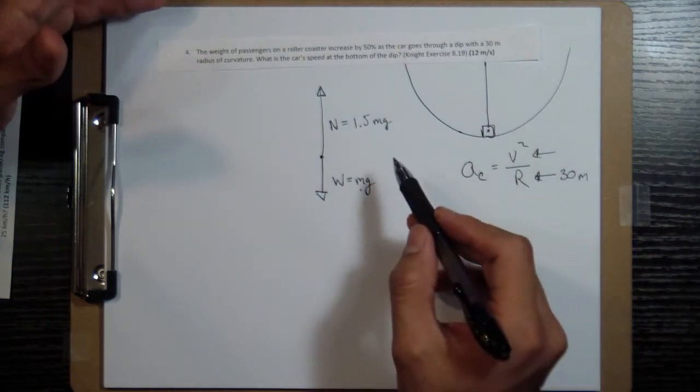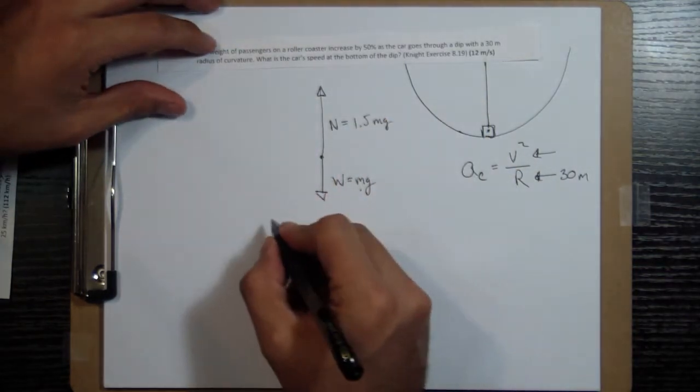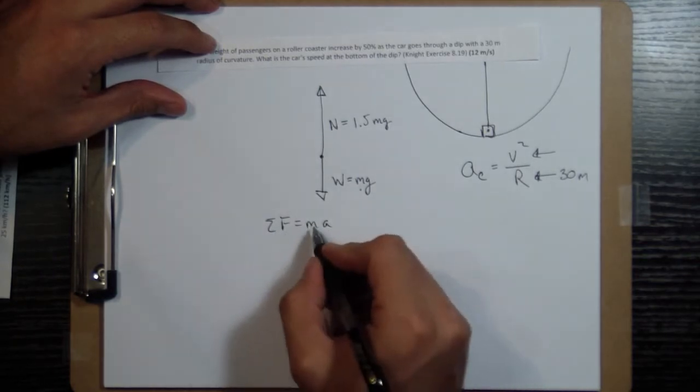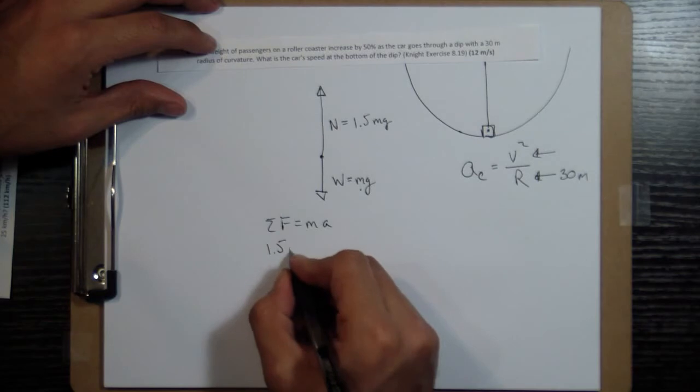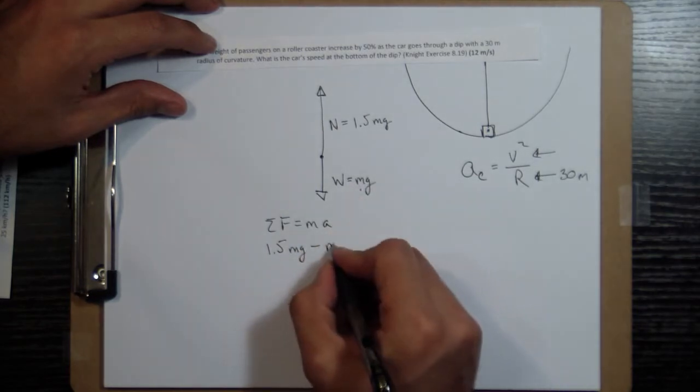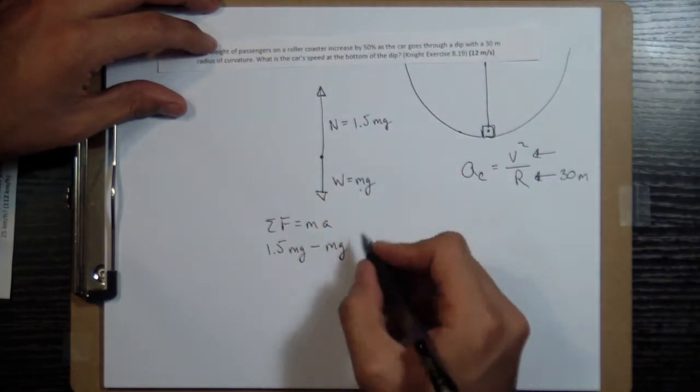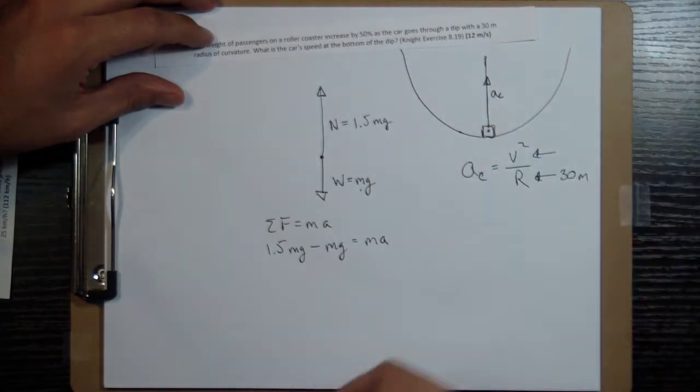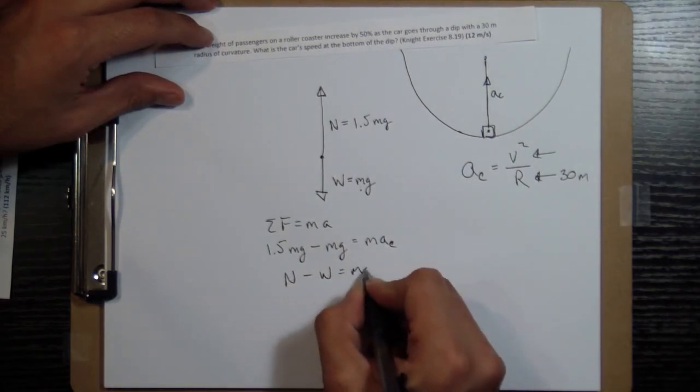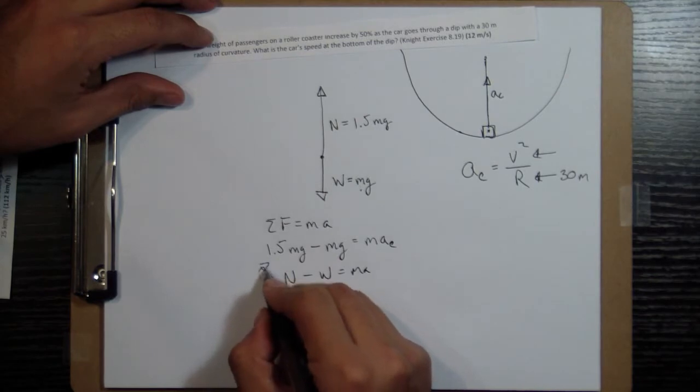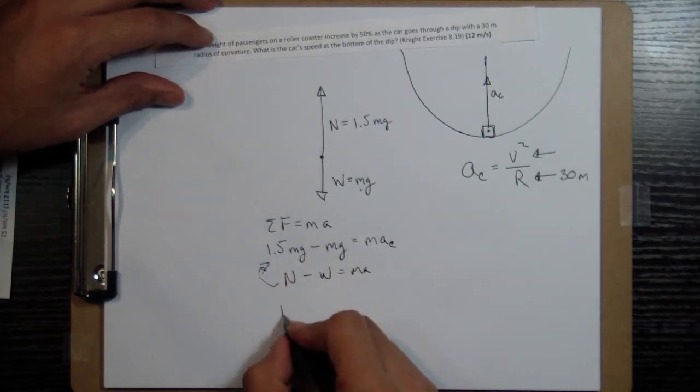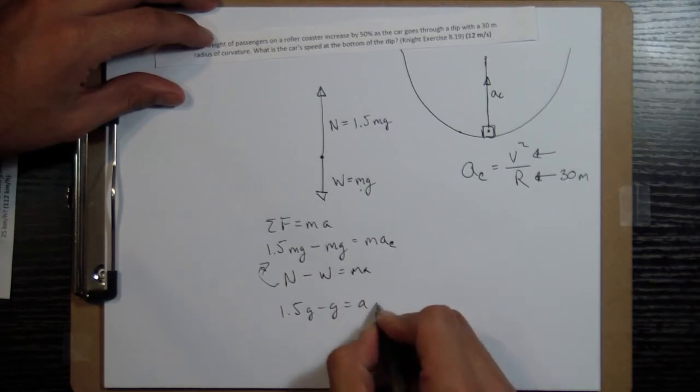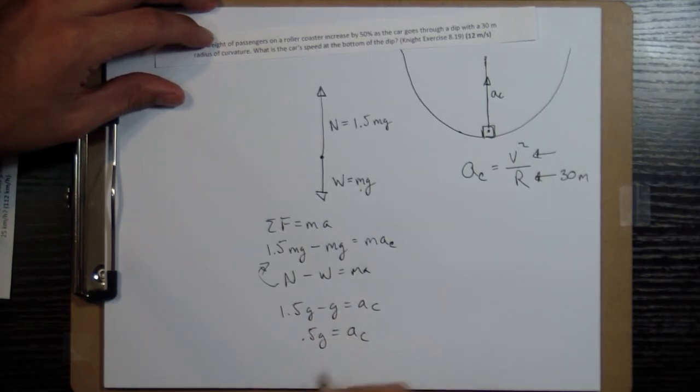And if we look at Newton's second law for this, we're going to have sum of forces equals mass times acceleration. So the sum of forces here is going to be 1.5 mg minus mg. So I'm writing the normal force minus W equals mass times acceleration. And this is in the centripetal direction. So this is going to be your centripetal force. So the m's cancel out. That's what's kind of nice. 1.5 g minus g equals AC. 0.5 g equals AC.